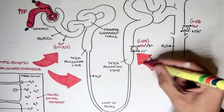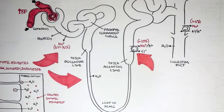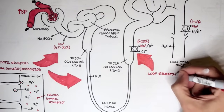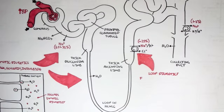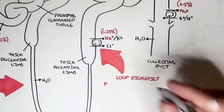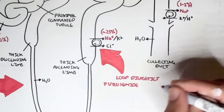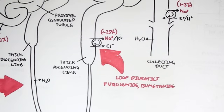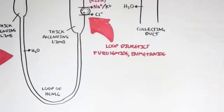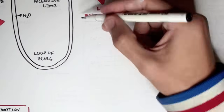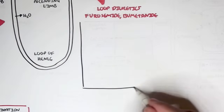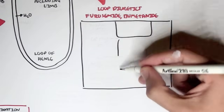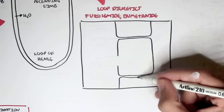The next type is loop diuretics. As the name suggests, they work at the loop of Henle — particularly at the thick ascending limb. These drugs include furosemide and bumetanide, easily remembered by their endings '-mide' and '-nide'. Loop diuretics work on the cotransporter on the thick ascending limb and thus prevent sodium reabsorption.